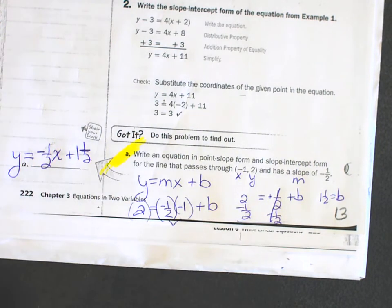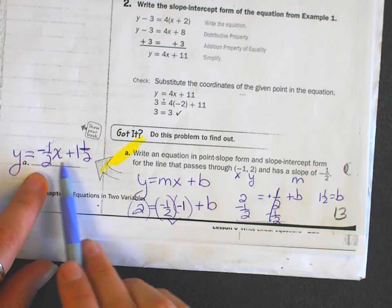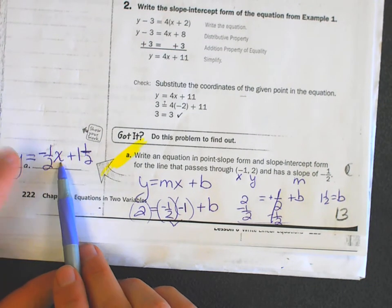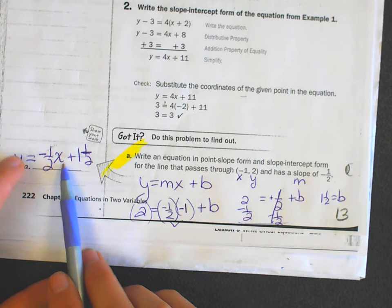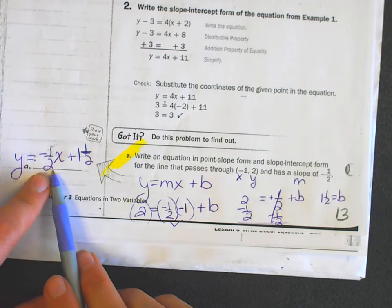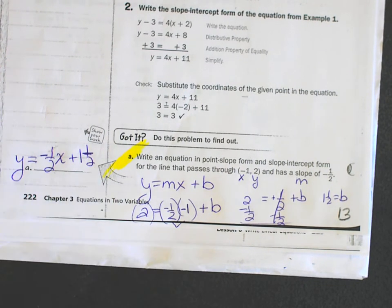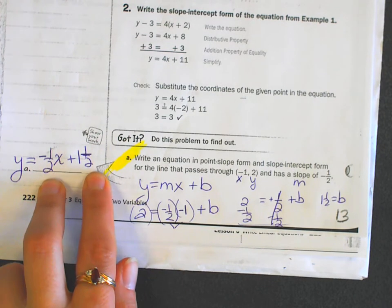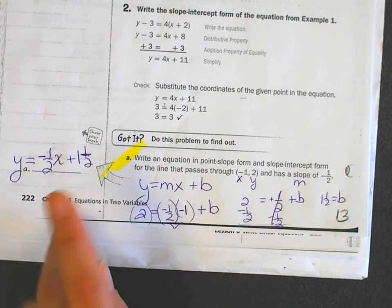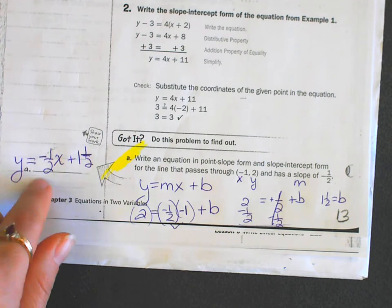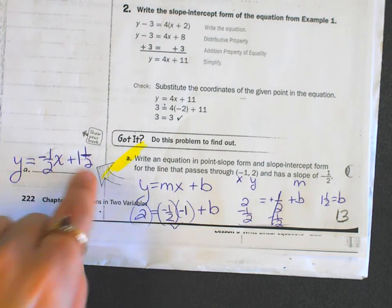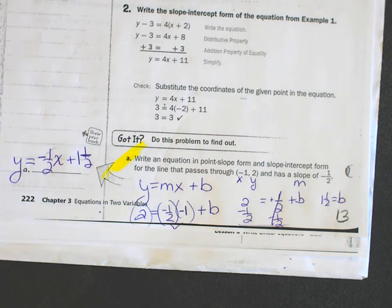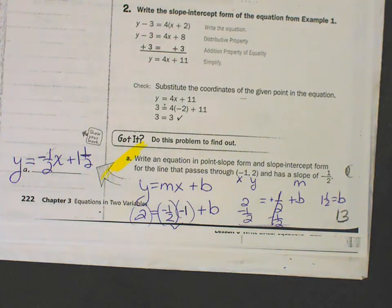Y equals MX plus B. The X and Y are variables because they have different points that follow this rate of change and this Y intercept. Leave the variables. Variables M and B are constants. They stay the same. Constant rate of change. Constant. B is a constant. The Y intercept. I'm going swimming now. See you later.